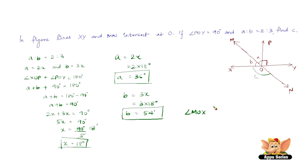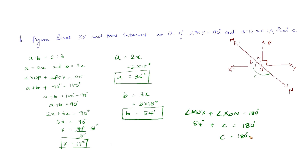Angle MOX plus angle XON equals 180 degrees, since they are a pair of angles on a straight line. Angle MOX is nothing but B, which is 54 degrees, and angle XON is nothing but C. So C equals 180 degrees minus 54 degrees, which equals 126 degrees.